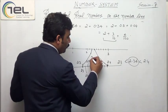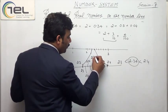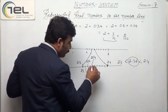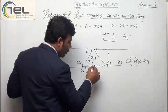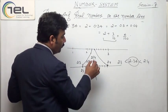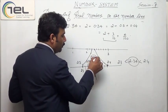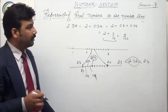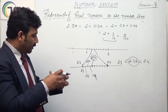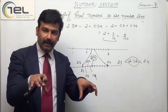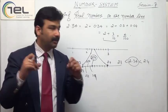This represents 2.34. So this is how I can represent any number — just magnifying, magnifying and magnifying them.